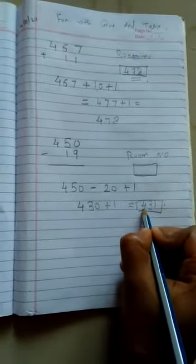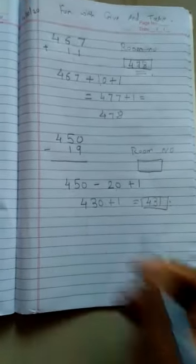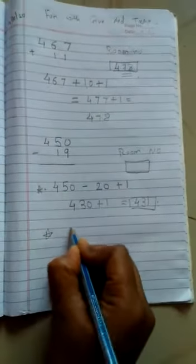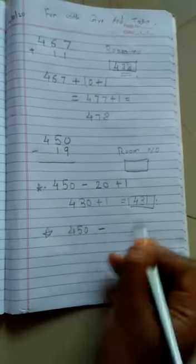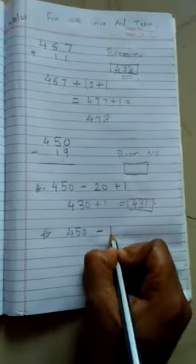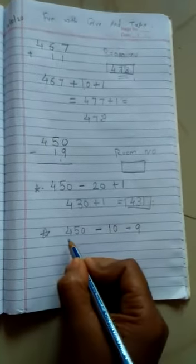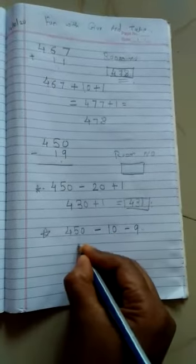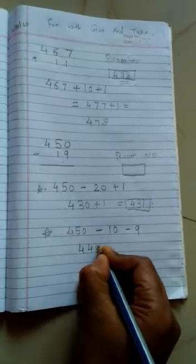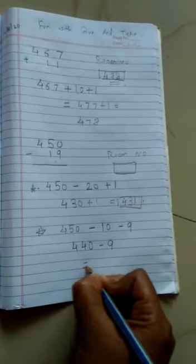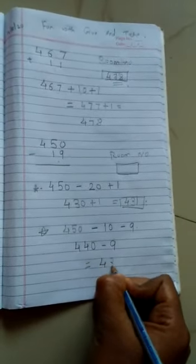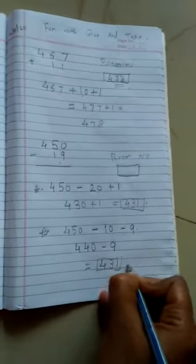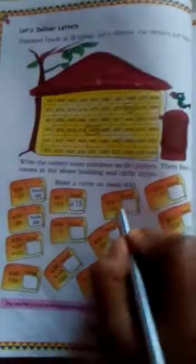So we will get the number 431 room number. We will do this example one more way. Look at here one more way. 450 minus 19 means 10 minus 9. So 450 minus 10, 440, minus 9. So we will get the answer 431. Both methods are correct. Let's write down here 431 and circle the room number 431.